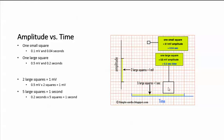Each large square is 0.5 millivolts in amplitude. How do we get that? We take 0.1 millivolts in a small square times 5 squares, and that gives us 0.5 millivolts.